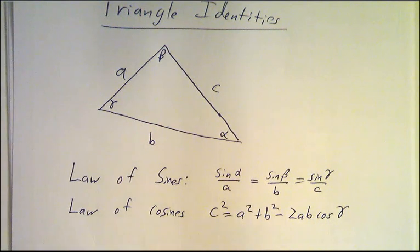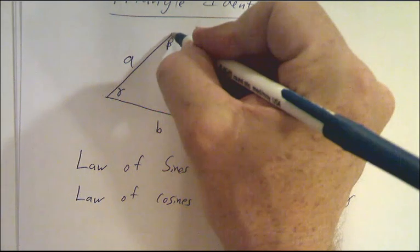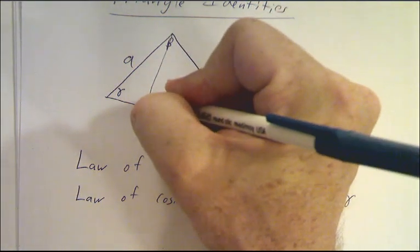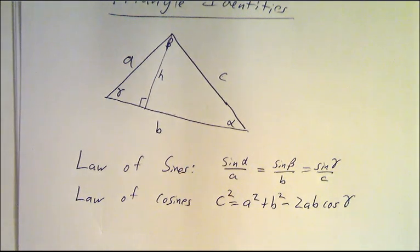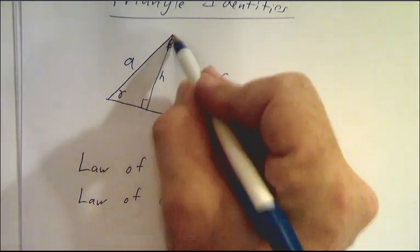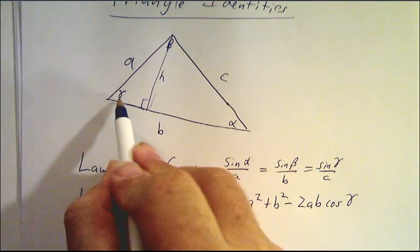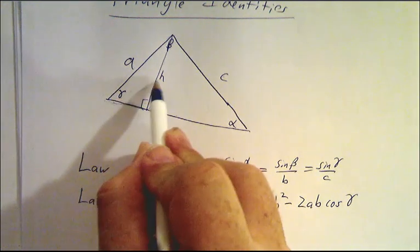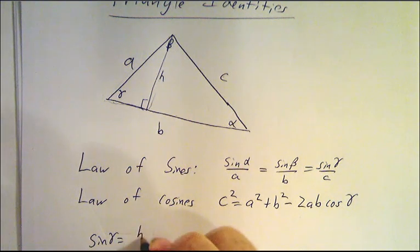So where did these come from? For the law of sines, let's drop the perpendicular here. Let's call this side H for height. Well, by looking at this triangle here, we say the sin of gamma is the height divided by A. Sin of gamma is H divided by A.